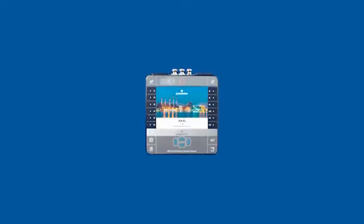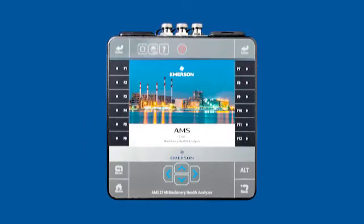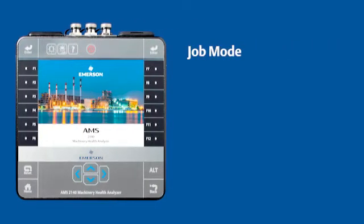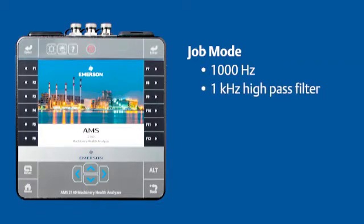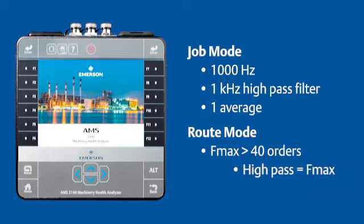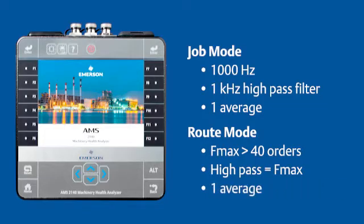Peak View measurements can be collected in both Job Mode or Route Mode. In Job Mode, the default setting will collect a spectrum up to 1000 Hz with a high-pass filter of 1000 Hz and one average. If you are in Route Mode, the settings will depend on the measurement point definitions. A good general recommendation would be to use an FMax with at least 40 orders and a high-pass filter that is equal to the FMax. It is important that when collecting Peak View data, you only collect one average.